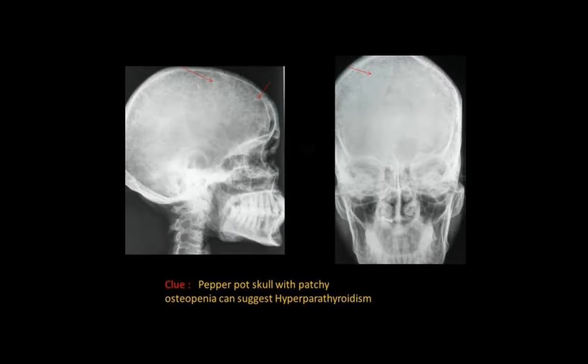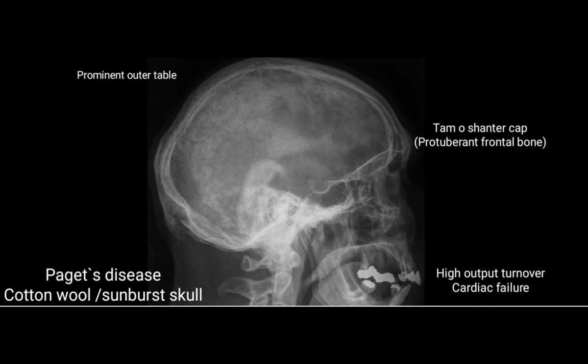This is an image of Paget's disease. In Paget's disease there will be a cotton wool or sunburst skull appearance — small lobes like cotton placed over the skull. The outer table will be more prominent, and the frontal bone is protuberant, known as tam-o'-shanter cap. It results in high-output cardiac failure.